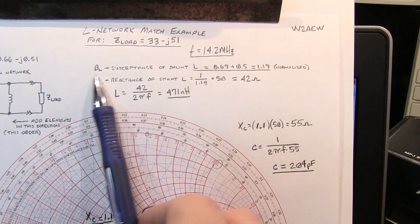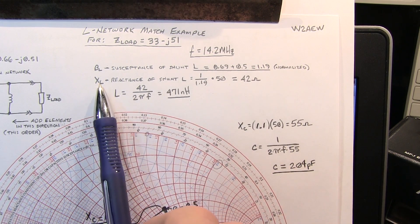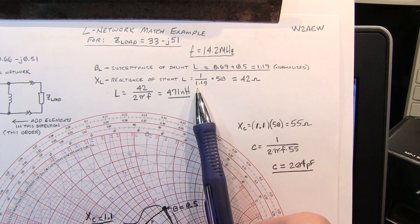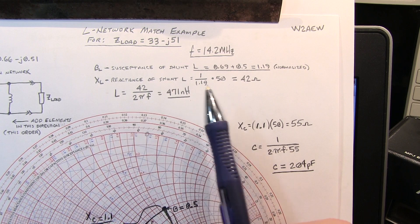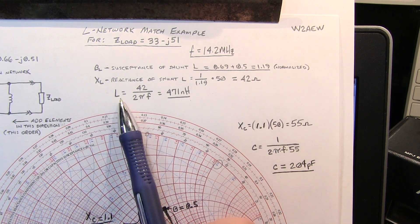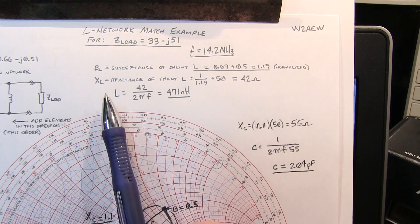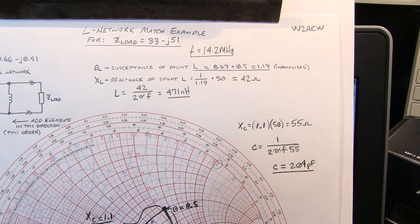So if our susceptance, our normalized susceptance that we moved is 1.19, the inductive reactance is essentially going to be 1 over that and then unnormalized times 50. So our inductive reactance of this shunt element is 42 ohms. So to calculate that back using our operating frequency of 14.2 megahertz, we can compute an inductor of 471 nanohenries.